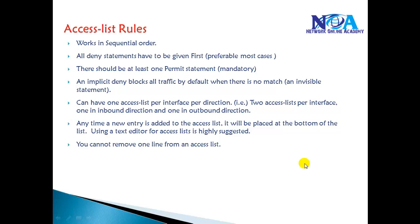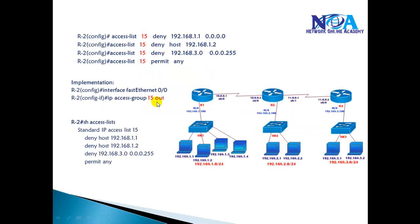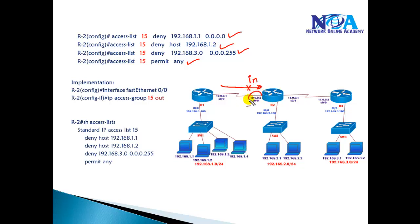In this video we'll talk about some of the access list rules we need to keep in mind when writing ACLs. The first rule is that an ACL generally works in a sequential order. This means it checks the first statement first. For example, given an ACL configured with deny 1.1, deny 1.2, deny 3.network, and permit all remaining — once a packet enters an inbound interface, it checks the first statement.